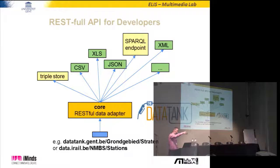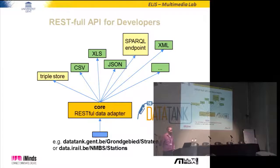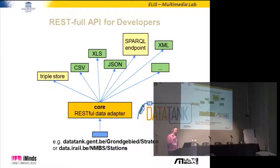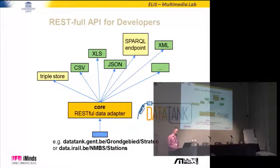Whatever comes in — CSV, XLS, JSON — we can output whatever you want. We also have a semantic version of it. The bottom line is: 15 minutes to publish open data and you get the RESTful API, so you can easily reuse it in your applications.